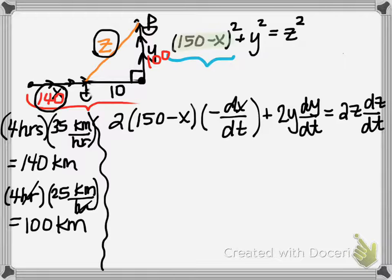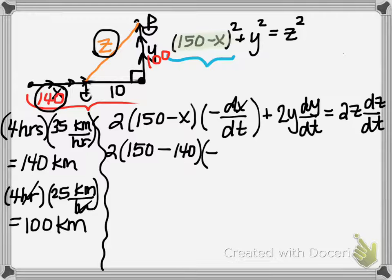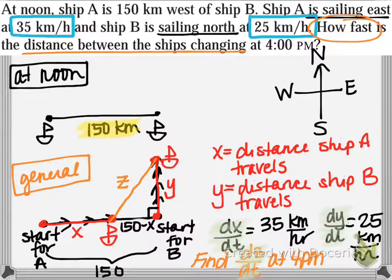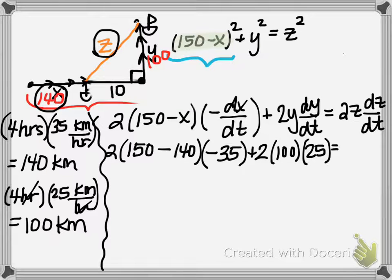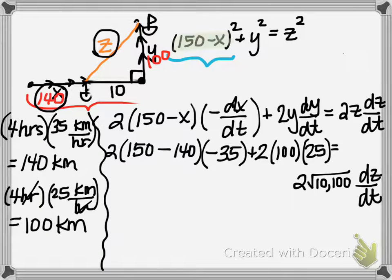Going back to our derivative equation, we substitute: 2(150 − 140)(−dx/dt) + 2(100)(dy/dt) = 2z · dz/dt. Here dx/dt = 35 and dy/dt = 25, and z = √10,100. Everything on the left-hand side can be multiplied and added. That gives 4,300 = 2√10,100 · dz/dt, which is what we're looking for — the rate at which the ships are separating.